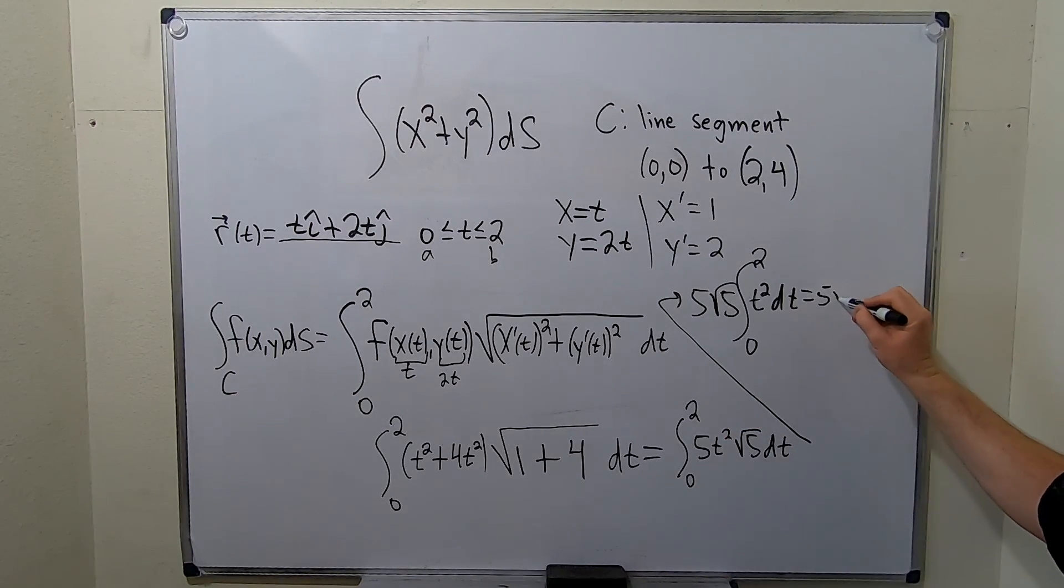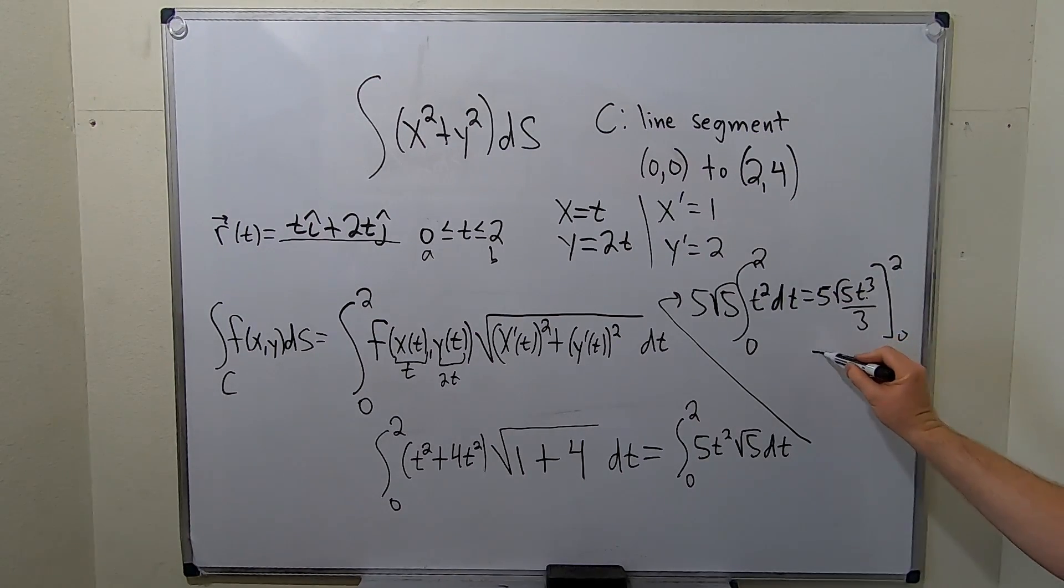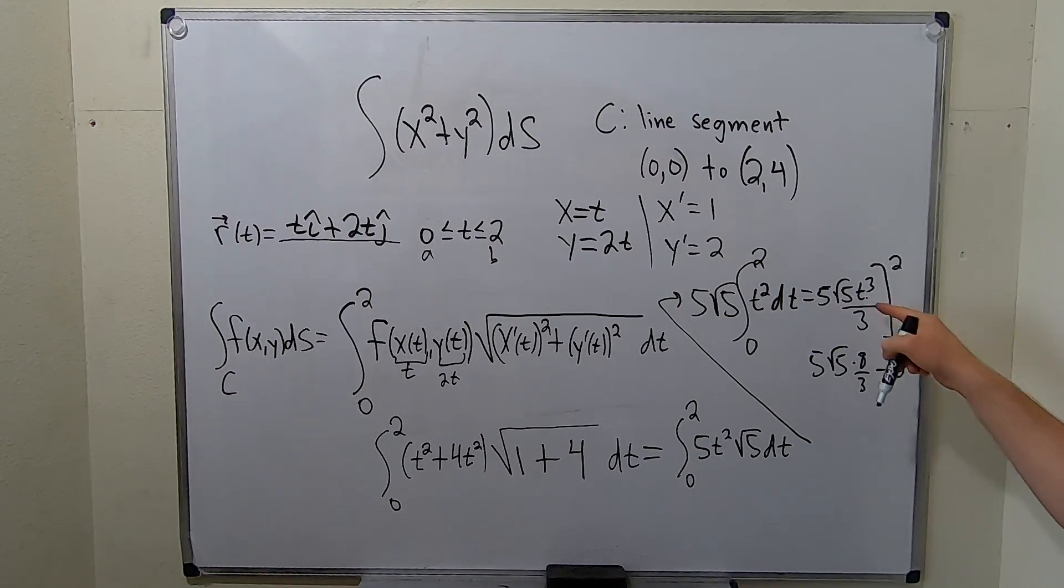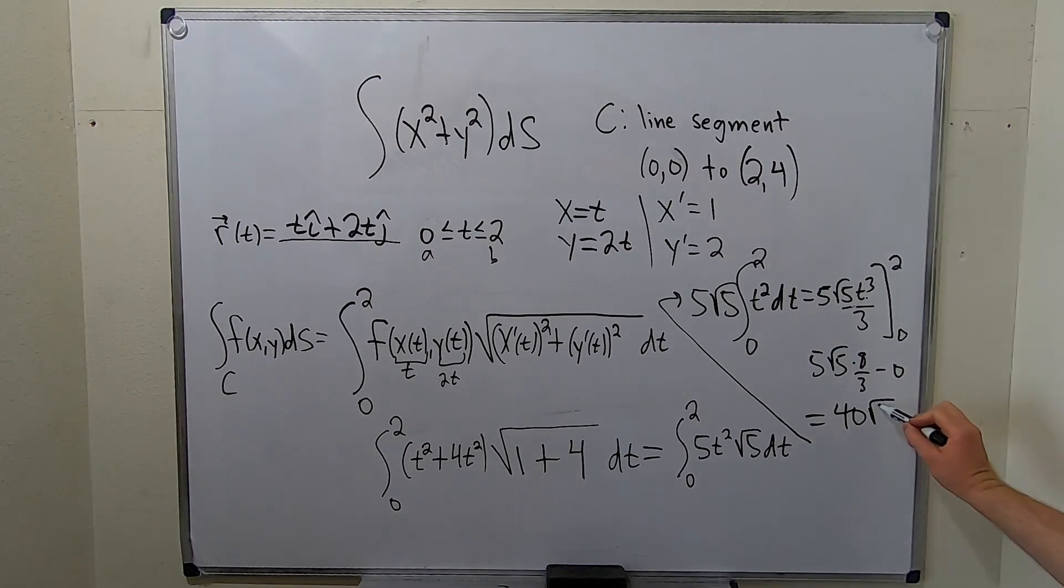Now we can integrate. We have 5 square root of 5 times t cubed over 3, going from 0 to 2. Plug in the 2 you get 8, so you have 5 square root of 5 times 8 over 3 minus 0. 8 times 5 is 40 square root of 5 over 3, and that would be the value of the line integral.